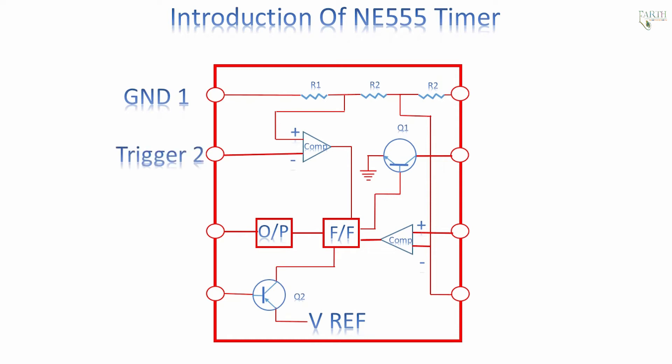Pin 2, trigger, detects one-third of rail voltage to make output high. Pin 2 has control over pin 6.